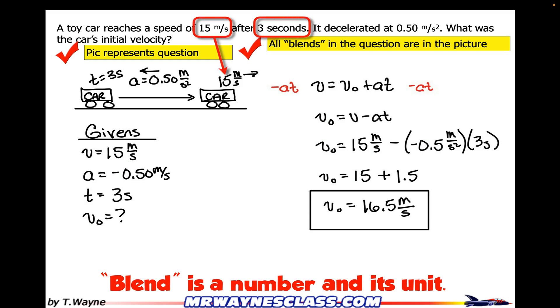So all the blends in the question are in the picture. So when I'm looking through the question, I can see you've got 15 meters per second, 3 seconds, and 0.5 meters per second squared. Numbers and units. Those are our blends that we're putting into the question.